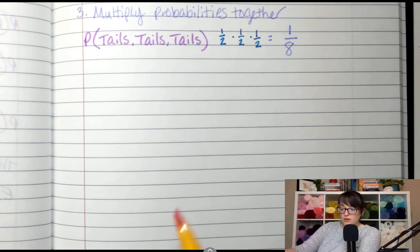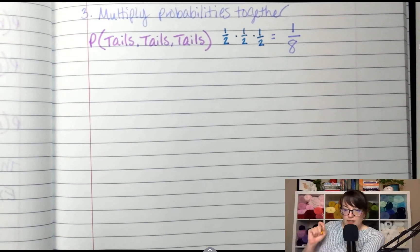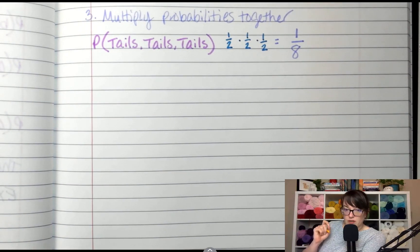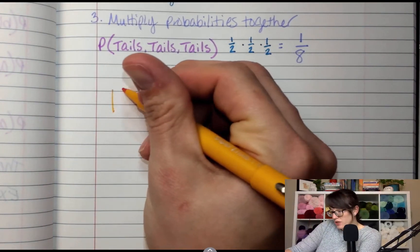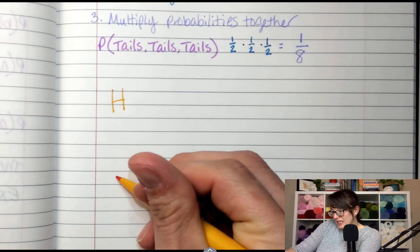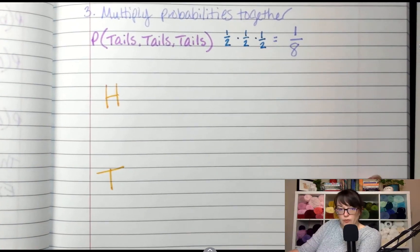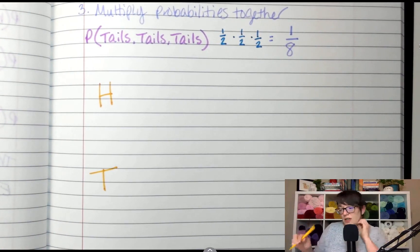I'm going to flip a coin. What are the two outcomes I have when I flip a coin? Heads or tails. So I'm going to put H and T and I'm going to leave some room. H and T, heads and tails.